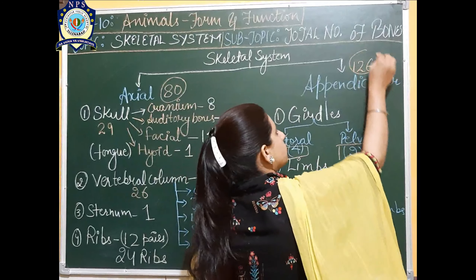In the limbs, there are two types: forelimbs (your arms and hands) and hindlimbs (your legs and feet). Each forelimb has 30 bones, so both forelimbs together have 60 bones. Each hindlimb also has 30 bones, so both hindlimbs together have 60 bones. Girdles (4 + 2 = 6) plus forelimbs (60) plus hindlimbs (60) gives the appendicular skeleton a total of 126 bones.